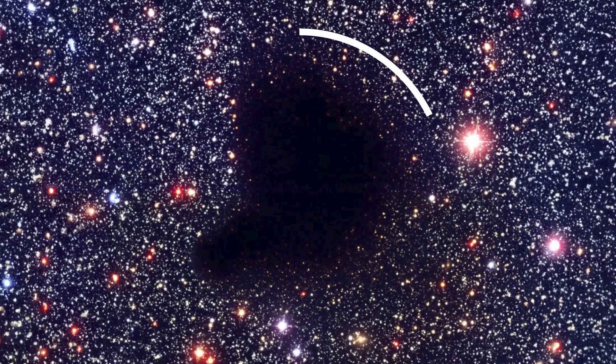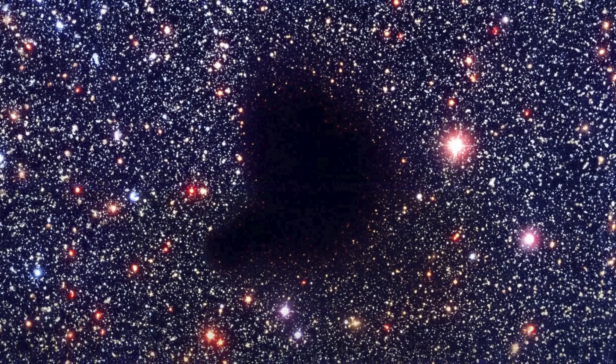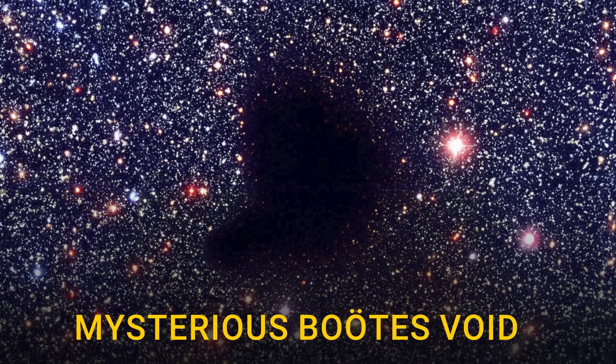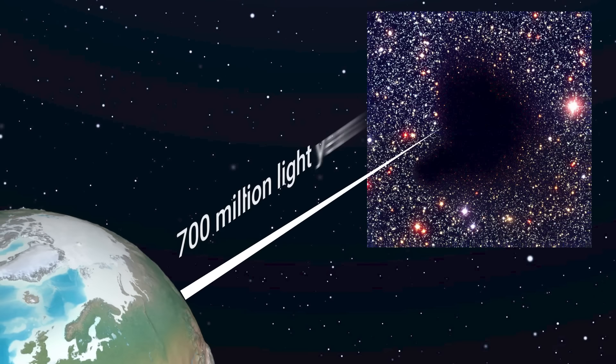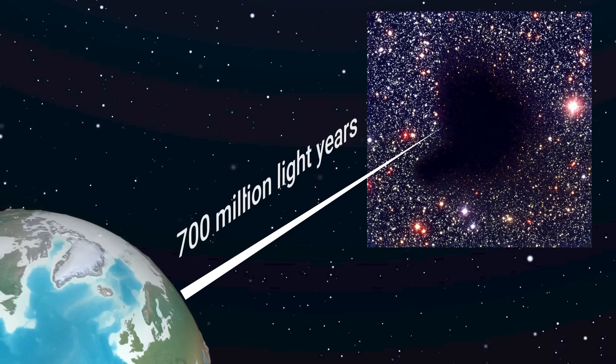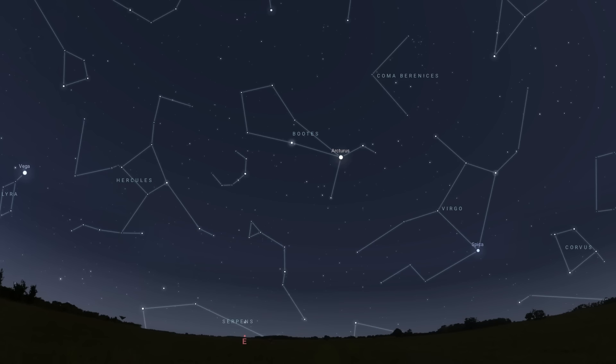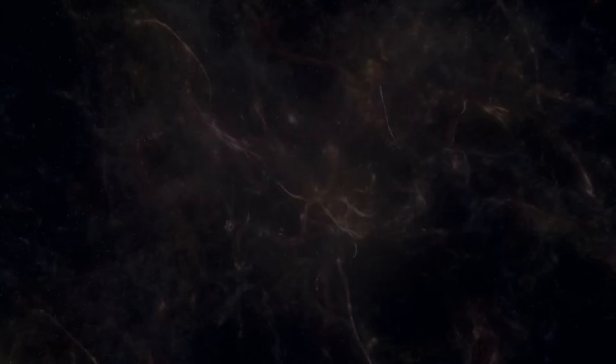And then, it dawns on you. What you're looking at is the mysterious Boötes void. It lies about 700 million light-years away from Earth in the constellation of Boötes, the herdsman driving the plow around the North Pole. At first, this void was called the Great Nothing. But later, it was given its current name.